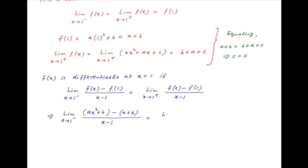On the right-hand side, x is greater than 1, so f(x) equals bx squared plus ax plus c. Plugging in, the numerator becomes bx squared plus ax plus c minus (a plus b), with the denominator remaining as x minus 1.